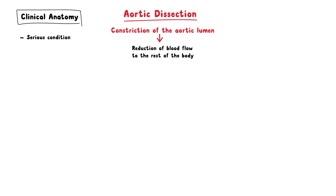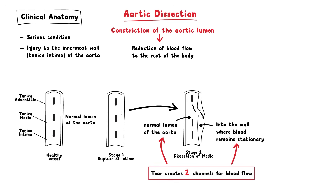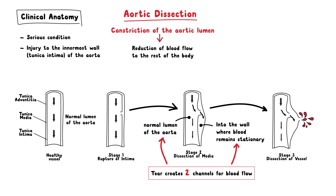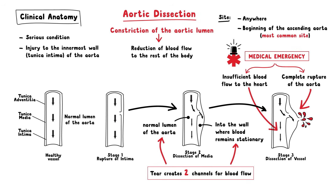Aortic dissection is a serious condition which occurs when there is injury to the innermost wall, known as the tunica intima of the aorta. This tear creates two channels for blood flow: the normal lumen of the aorta, and a channel into the wall where blood remains stationary. Blood remaining in the wall can result in constriction of the aortic lumen, leading to a reduction of blood flow to the rest of the body. Aortic dissection is a medical emergency and can quickly result in death due to insufficient blood flow to the heart or complete rupture of the aorta. The most common site is the beginning of the ascending aorta. Patients will classically present with a tearing chest pain which radiates through to the back.